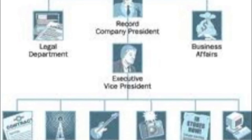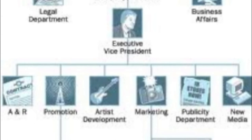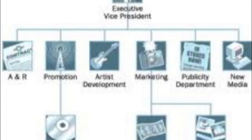A record label is made up of different departments that all have an executive vice president. These departments all have different jobs. The main departments in a record label are the A&R, Promotion, Artist Development, Marketing, Publicity Department, New Media, Sales, Art Department, Business Affairs and Legal Department. There are many more sub-departments that are within the main departments.